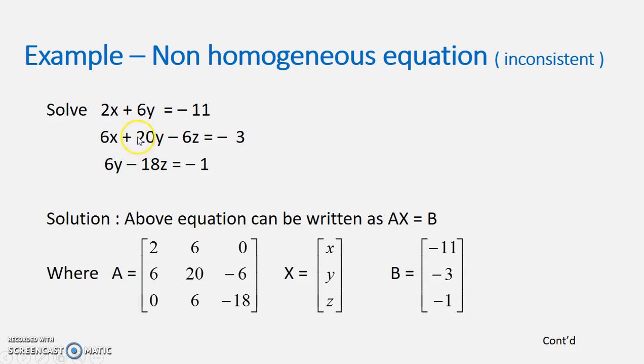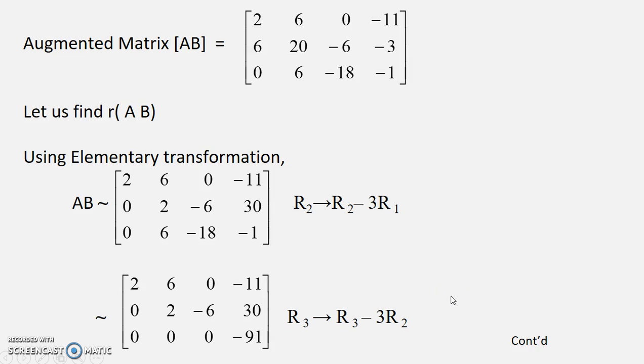Then 6, 20, 6. Then 0. Z value is not there. So 0. So -6 and -18. X is this by B is -11, 13 and -1. Now when we adjoin B to A you get this matrix here.